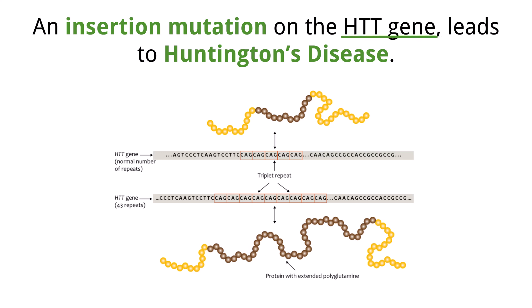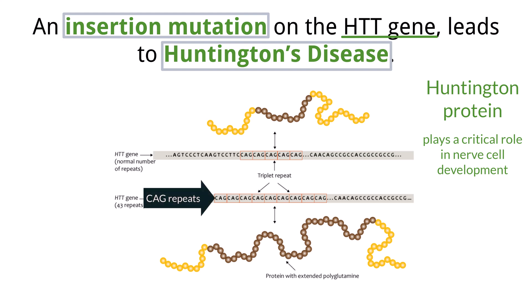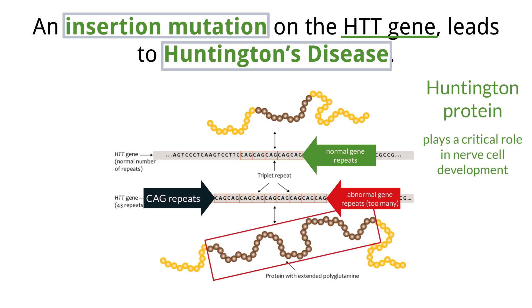The HTT gene codes for a protein called Huntingtin. Although the exact function of this protein is unknown, it appears to play an important role in nerve cells in the brain and is essential for normal development before birth. In people with Huntington's disease, there is an insertion mutation in the gene — a sequence of CAG bases is repeated too many times. The normal HTT gene has fewer than 36 CAG repeats, which code for the amino acid glutamine. In affected individuals, there are more than 36 repeats, sometimes more than 100. This leads to an abnormally long stretch of glutamine in the Huntingtin protein, which misfolds and accumulates in neurons.